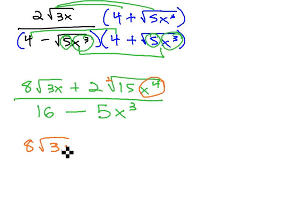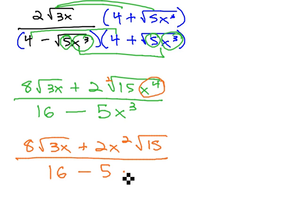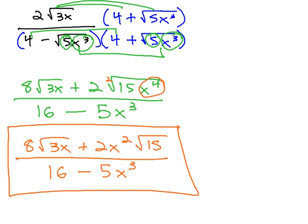So we get 8 square root of 3x, plus 2x squared, square root of 15, all over 16 minus 5x cubed. And that becomes our final solution.